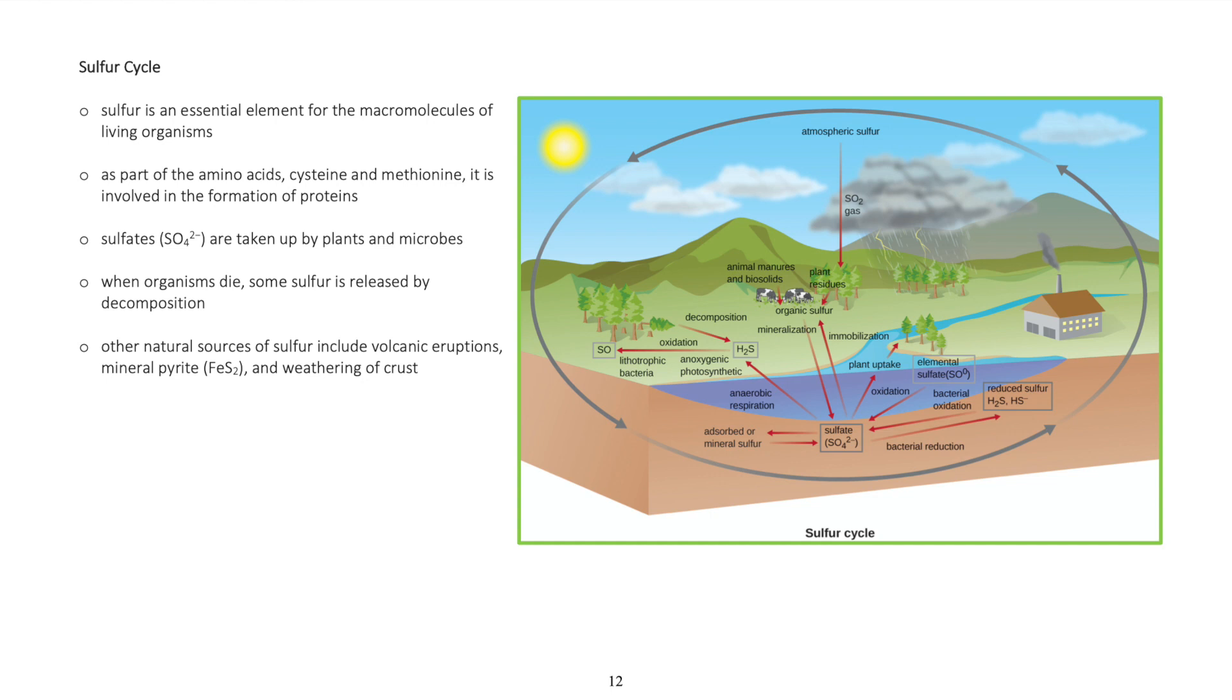Sulfates are taken up by plants and microbes. When organisms die, some sulfur is released by decomposition. Other natural sources of sulfur include volcanic eruptions, mineral pyrite, and weathering of crust.